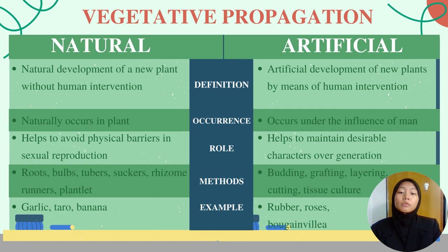Some of the natural methods are roots, bulbs, tubers, suckers, rhizomes, runners, plantlets, and corms, while artificial methods are budding, grafting, layering, cutting, and tissue culture. Examples of natural propagation include garlic, taro, and banana, while artificial propagation examples include rubber, roses, and bougainvillea.